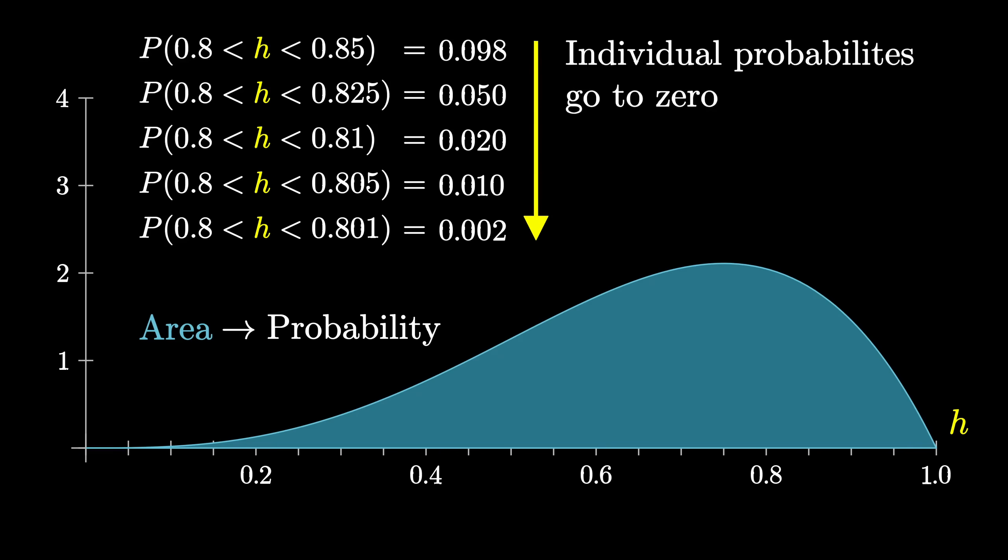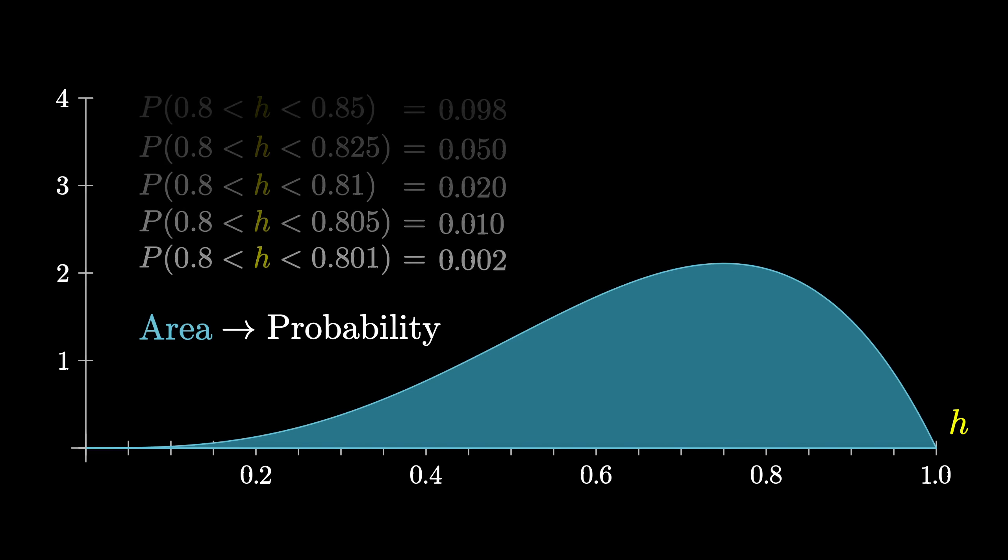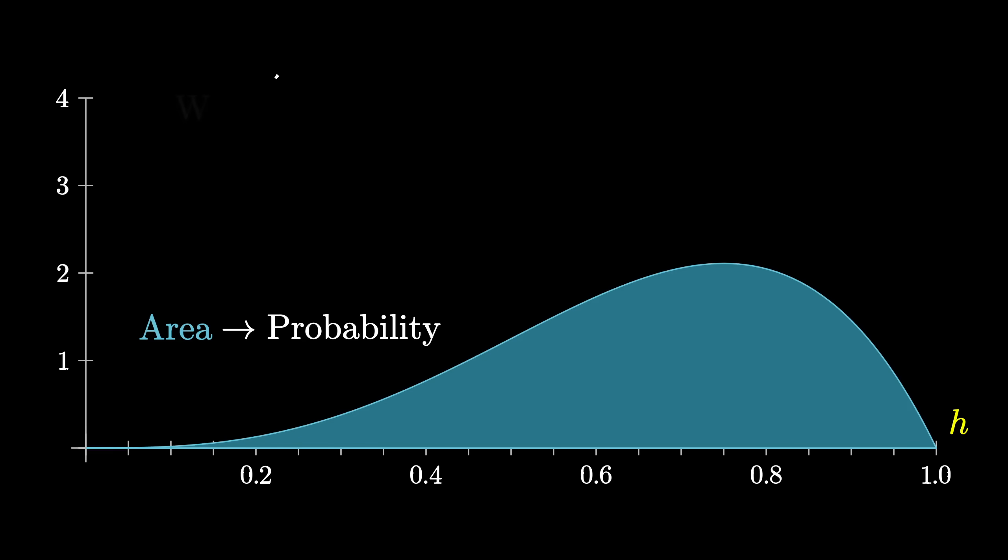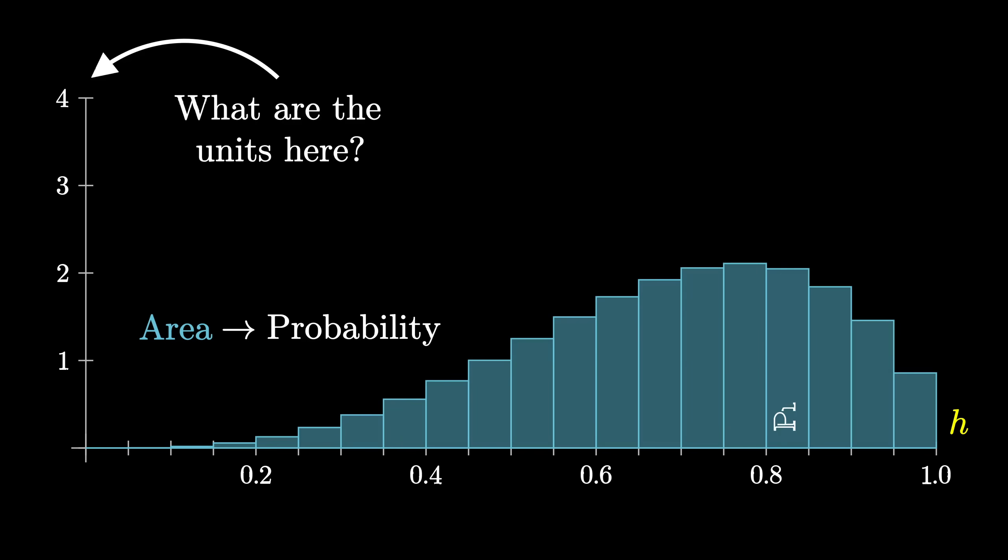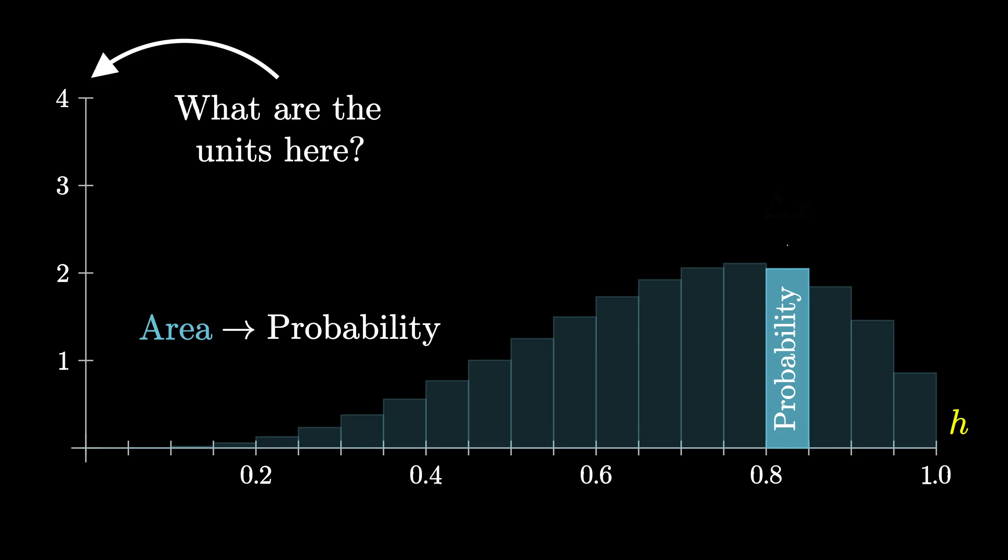So wonderful, letting area represent probability helps solve this problem. But let me ask you, if the y-axis no longer represents probability, what exactly are the units here? Since probability sits in the area of these bars, or width times height, the height represents a kind of probability per unit in the x-direction, what's known in the business as a probability density.